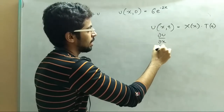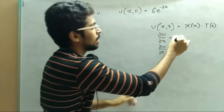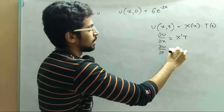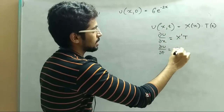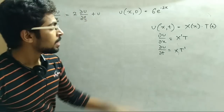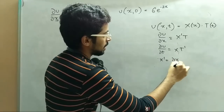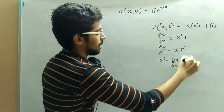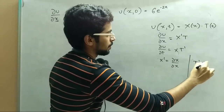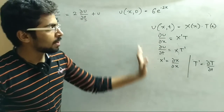From this function we will find del of u by del of x and del of u by del of t. So del of u by del of x will be X dash T, and del of u by del of t will be X T dash. Same way X dash equals to del of X by del x, and T dash equals to del of T by del of t.